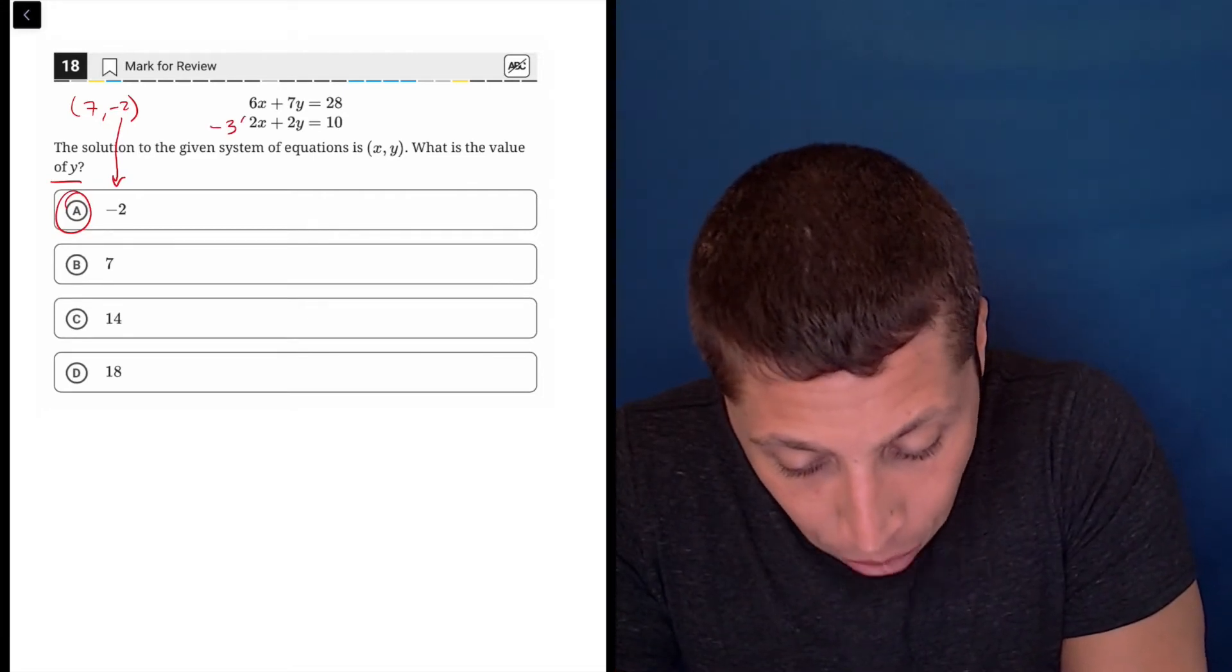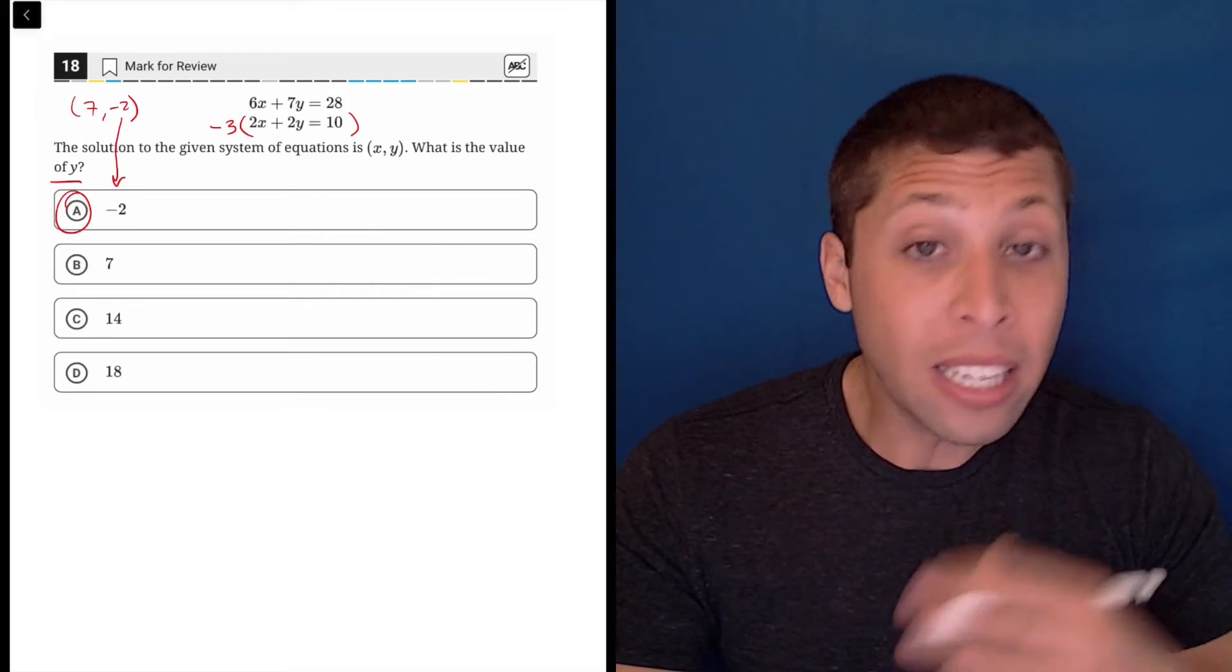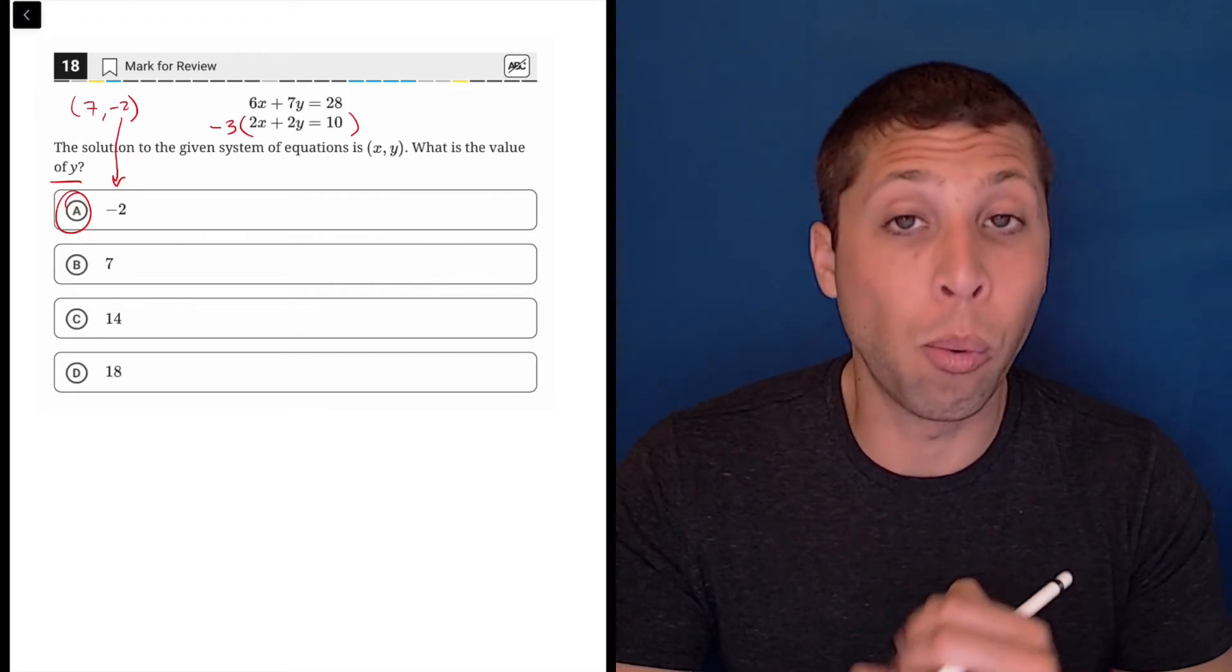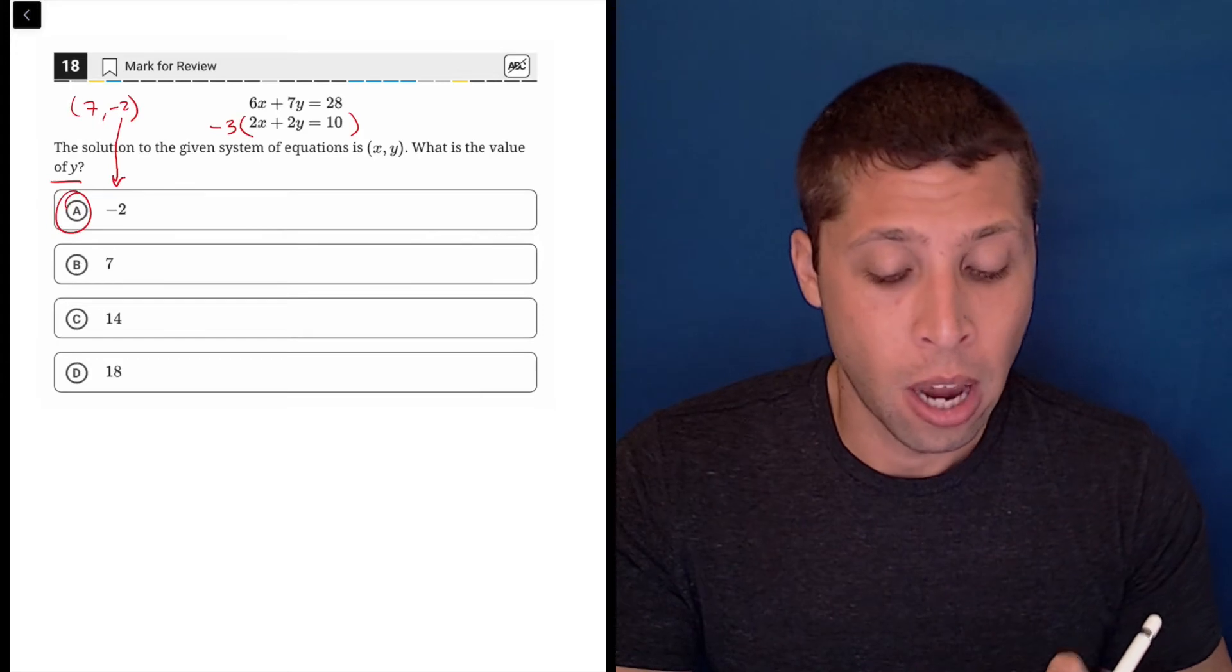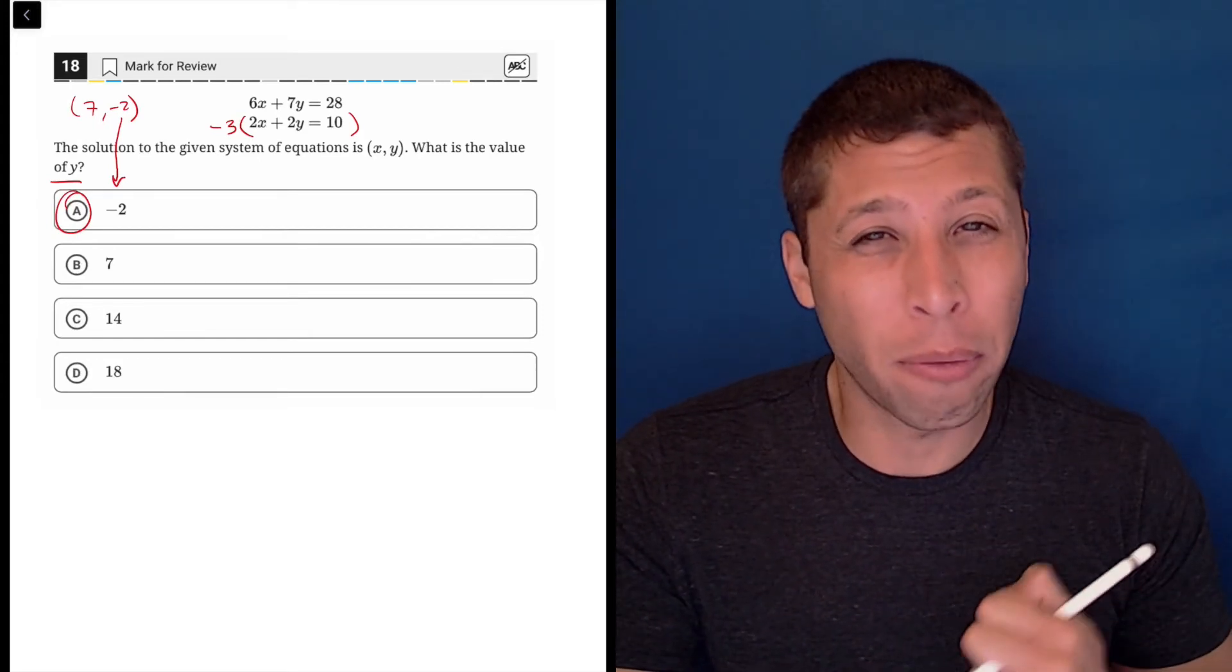So if I multiplied by negative 3, that would let me get rid of the x's. And that's just the easiest thing, right? Because it only involves me multiplying one of the equations. Whereas if I try to get rid of the y's, I would need to multiply both of the equations. So that would be a little bit more work.